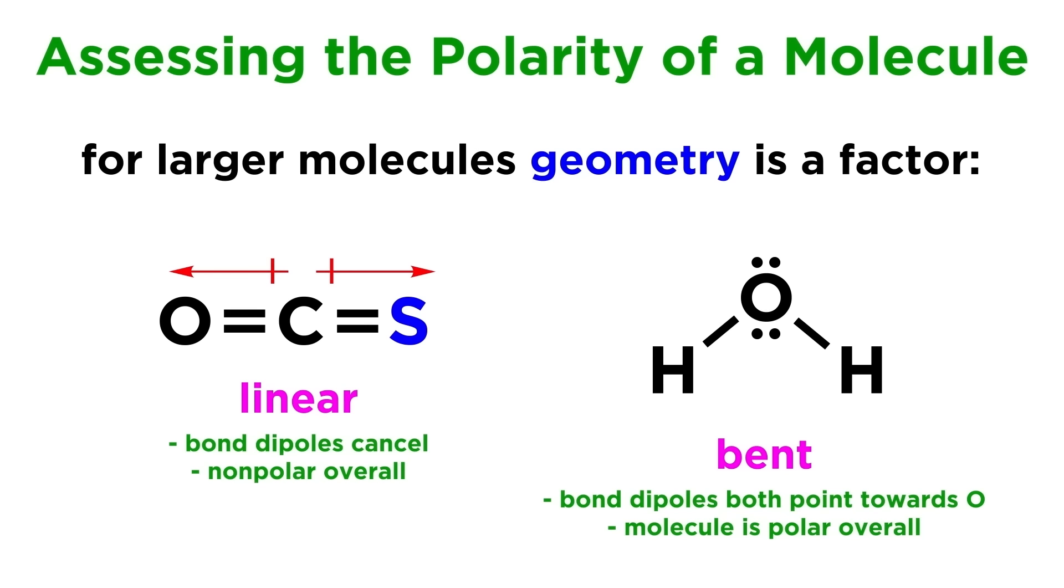If we replace an oxygen atom on CO2 with a sulfur atom, it will become polar, because the CS bond has a weaker dipole than the CO bond, so the net dipole will be slightly to the left.